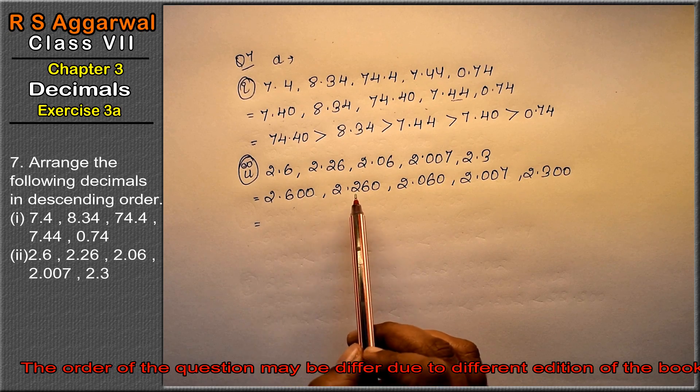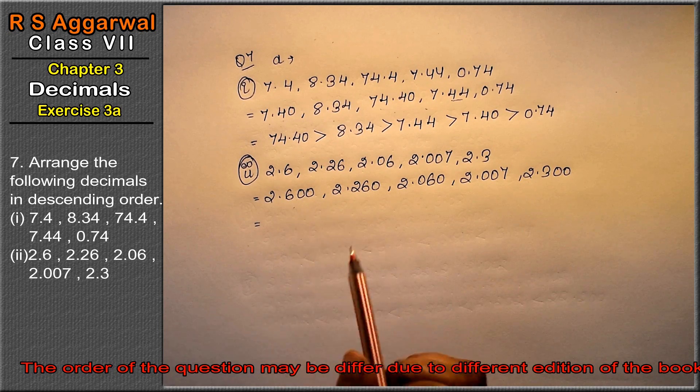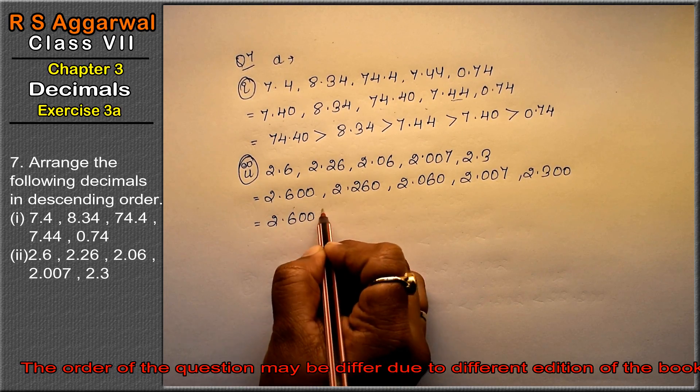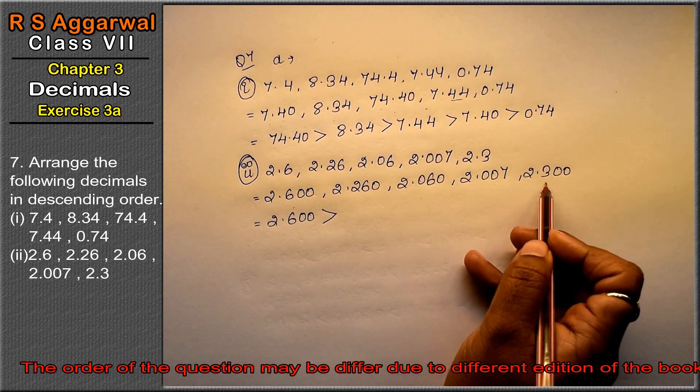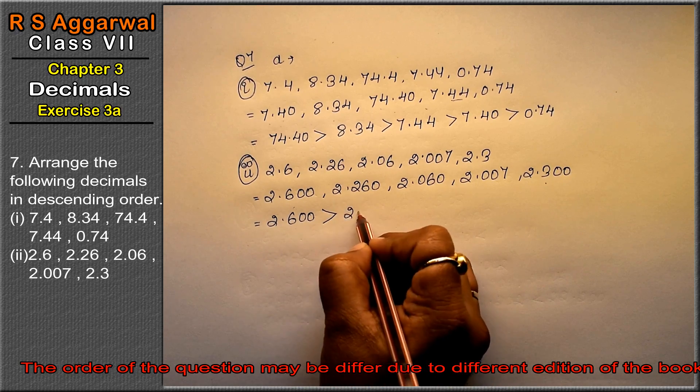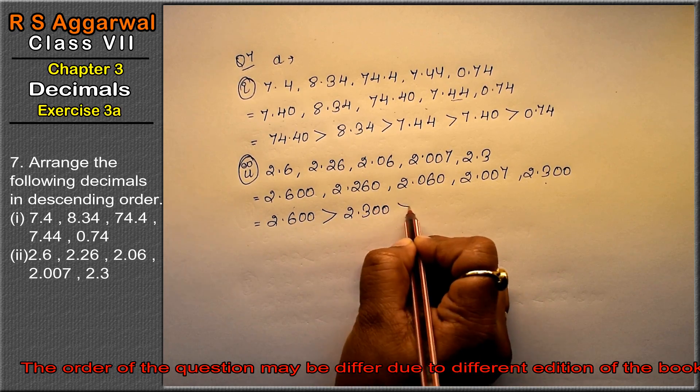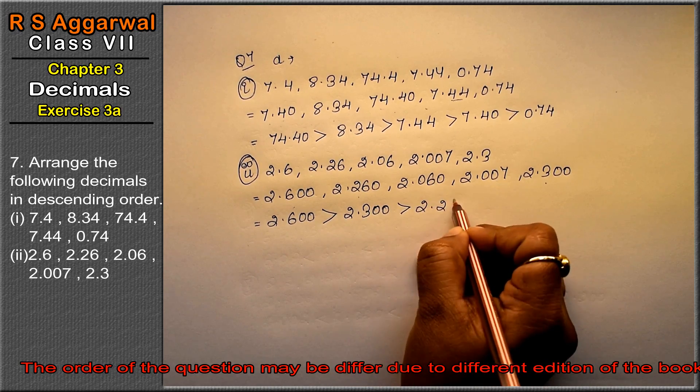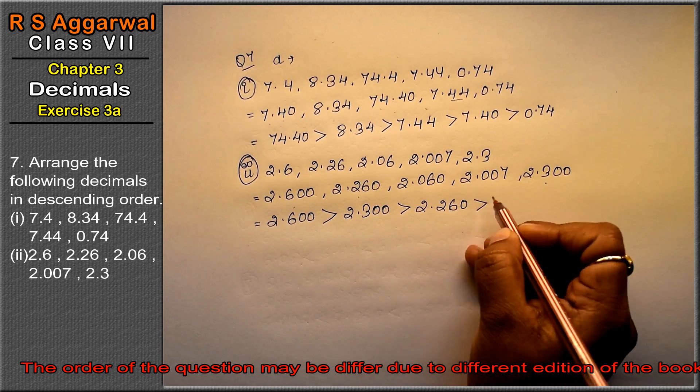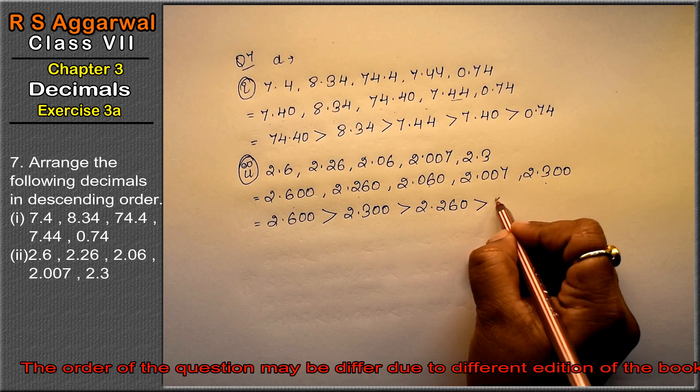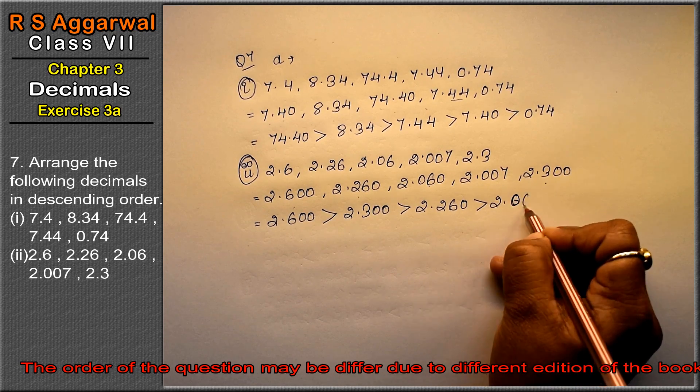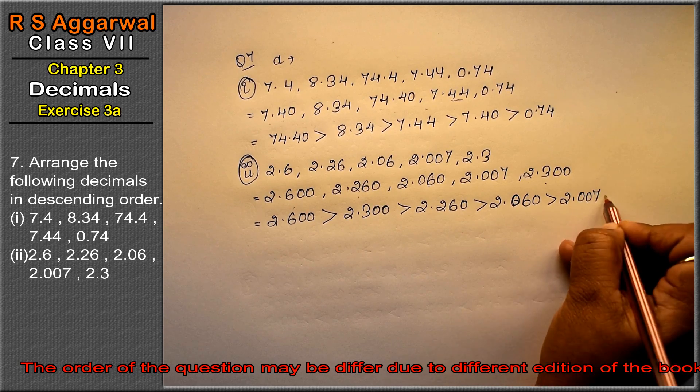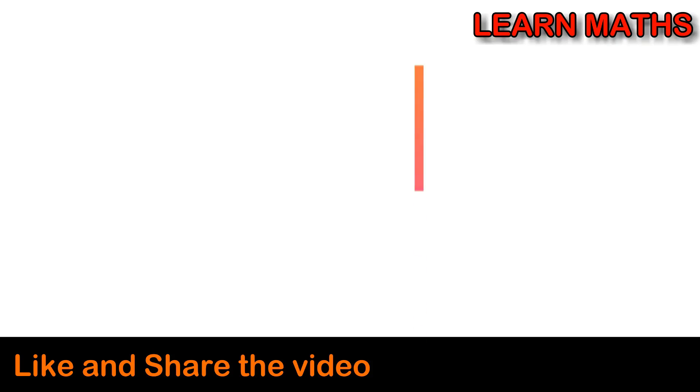See what is the biggest. All have 2 in front. See, 600 is bigger than 260. So 2.60 is first. What is next biggest? 300, so 2.300. After that, 2.260. Then 2.060. And then 2.007 is the answer.